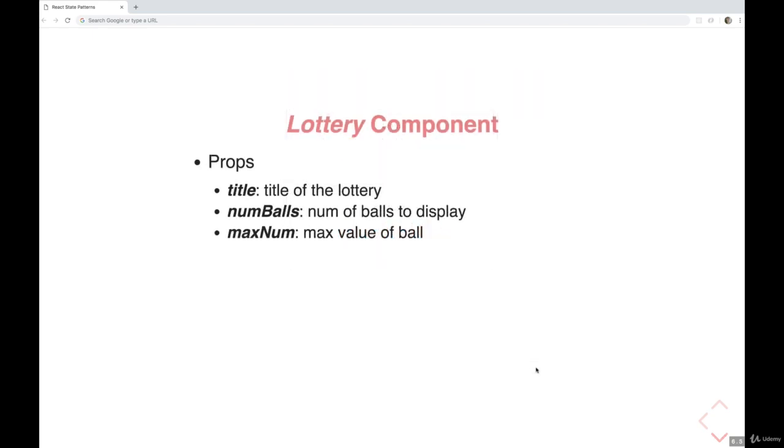So that brings us to state. We could store the state, the random numbers, in each of the ball components, which we haven't even talked about. But because of what we talked about in the last video, it's a lot better to just store the state, centralize it in this parent, the lottery component.